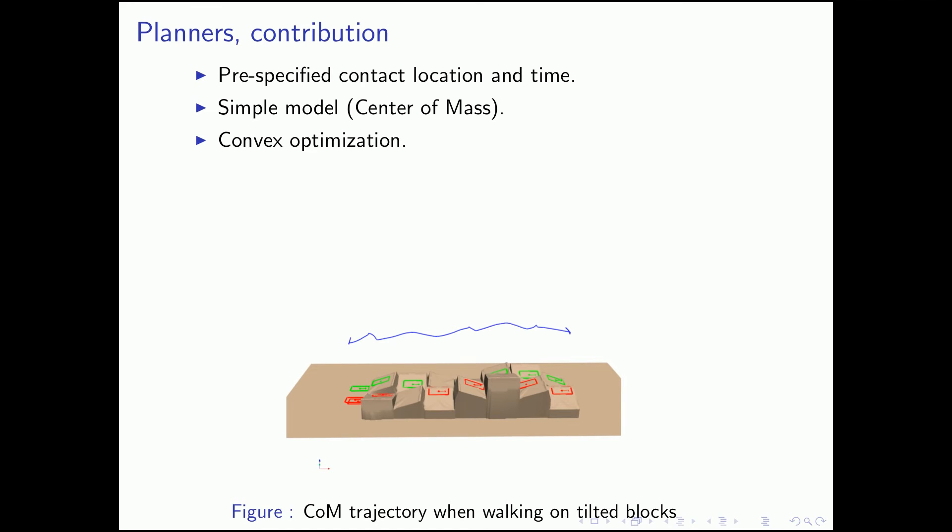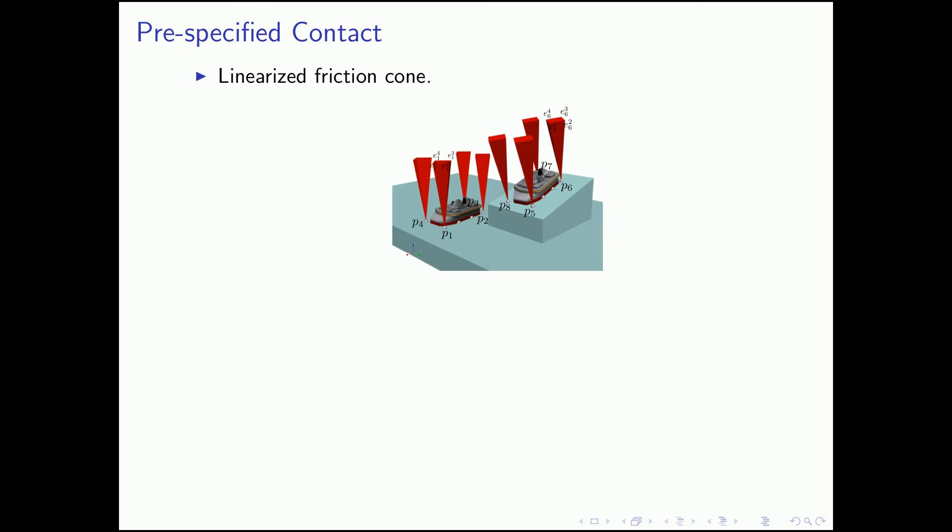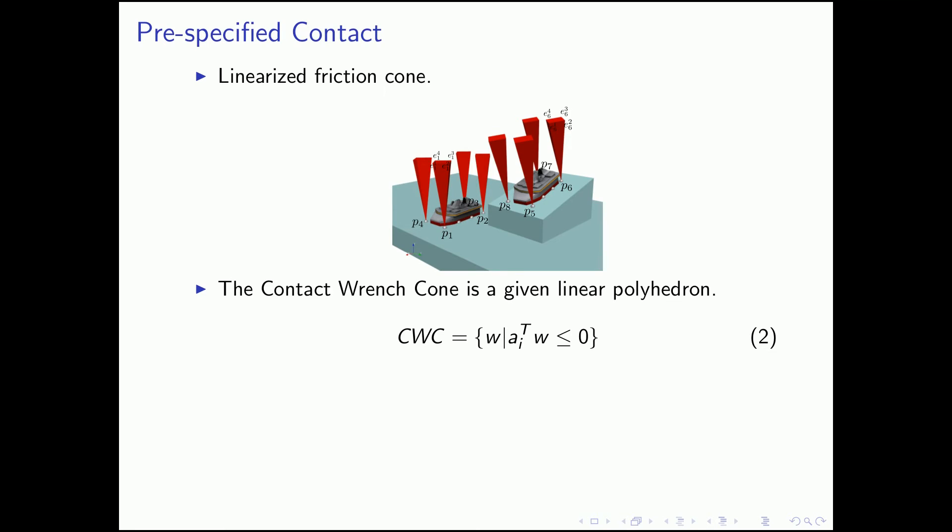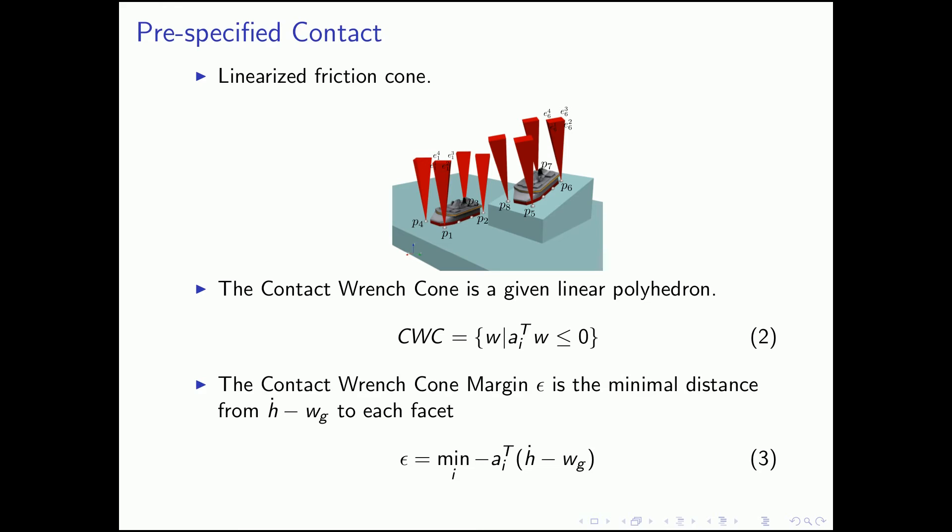To plan the robot motion, we use pre-specified contact locations and times, and a simple center of mass model of the robot. We formulate the motion planning as a convex optimization program and show that our planner works on uneven terrain where the ZMP planner fails. With pre-specified footstep locations, we first get the linearized friction cone at each contact location. The contact wrench cone is thus a given linear polyhedron, and the constraint that the contact wrench lies within the contact wrench cone is a convex constraint. The contact wrench cone margin is the smallest distance from the contact wrench to each facet of the cone, and thus a concave function, which we can maximize in a convex optimization problem.